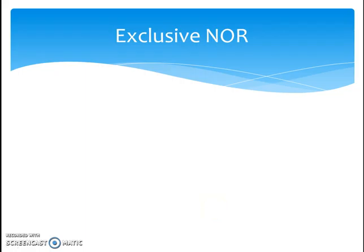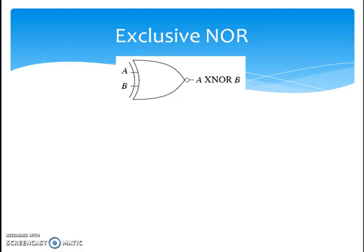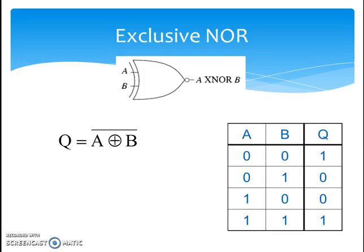Exclusive OR can be extended to exclusive NOR. It is the same as XOR but with a complement. My equation for XNOR will be exactly the opposite of XOR. As a result, the truth table is also exactly the reverse of XOR: when both inputs are the same, I get output as logic 1; when both inputs are different, I get output as logic 0. This makes XNOR an equality detector.